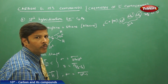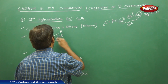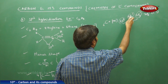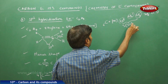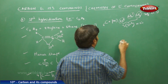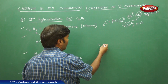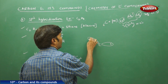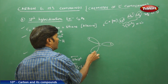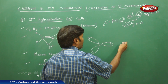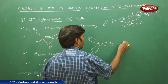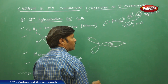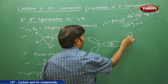Each carbon undergoes sp2 hybridization, and since the number of atomic orbitals involved equals the number of hybrid orbitals formed, three sp2 hybrid orbitals are produced per carbon. For each of the two carbons, we have three sp2 hybrid orbitals, each containing one unpaired electron.